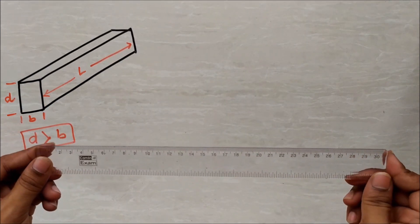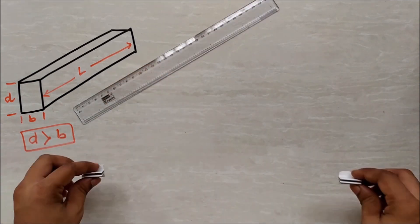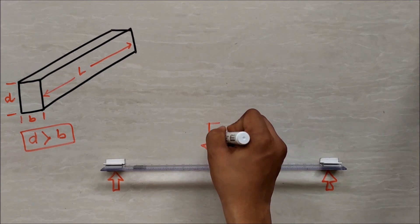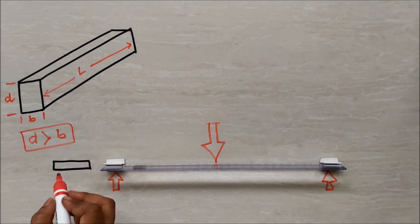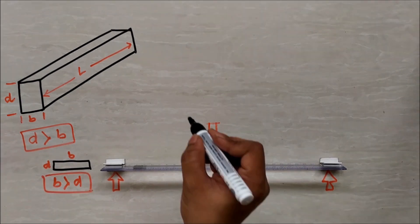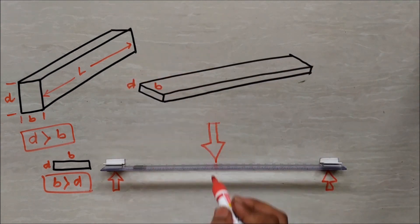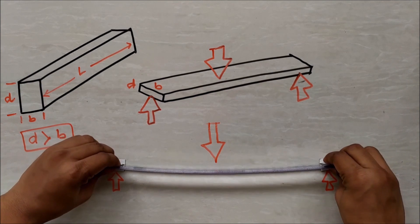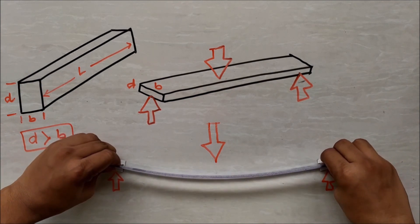Let's assume this scale as a beam, which is simply supported and a point load is acting on the middle of the beam length. And the beam is having width B and depth D, where D is greater than B. Now the position of scale and arrangement of loads are like this. What will happen when the loads will act, the beam will bend like this, even by a small load.